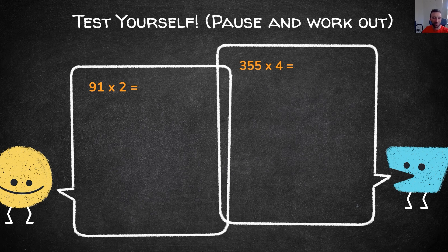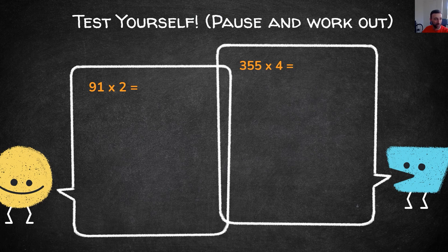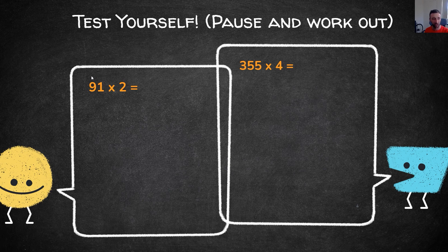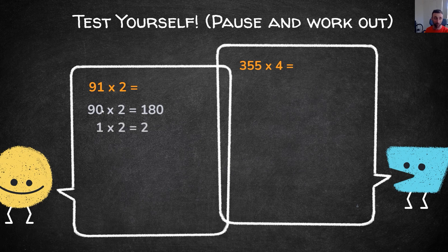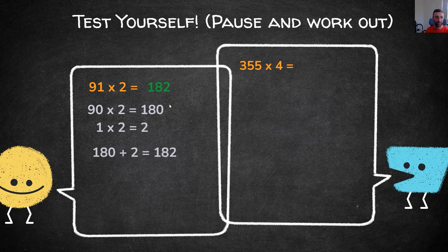Your working time is up, thank you for unpausing. It's time to go through the answers. We've got 91 multiplied by 2. We partition 91 into 90 multiplied by 2 which equals 180, and 1 multiplied by 2 which equals 2. Add them to get 182 as your final answer for the first result.